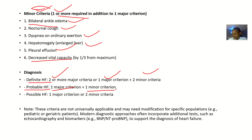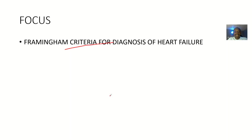Possible heart failure is when the person has one major criteria and two minor criterias. So these criterias are basically tools for confirming whether a patient has heart failure or not, subdivided into major criterias and minor criterias. That's it — bye for now.